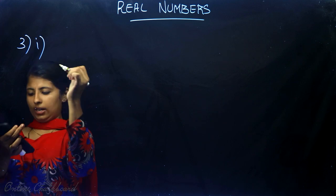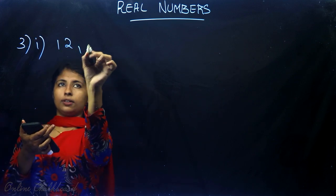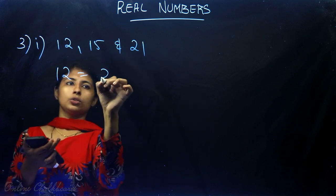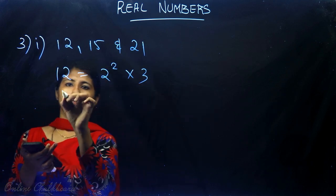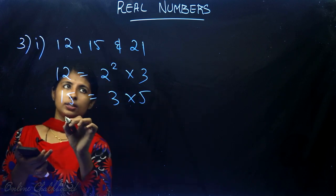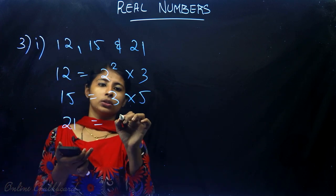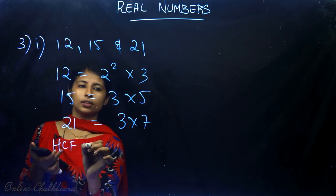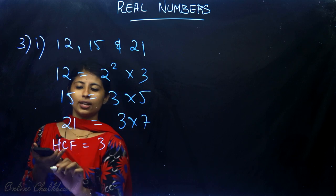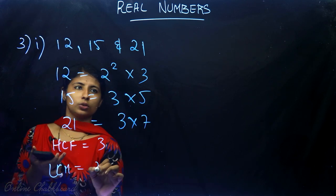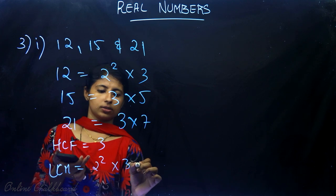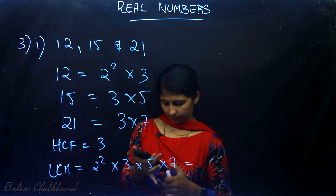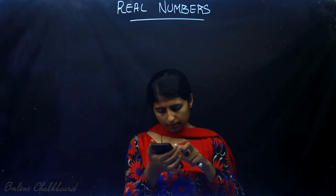For the sub-part with 12, 15, and 21: 12 = 2² × 3, 15 = 3 × 5, and 21 = 3 × 7. The highest common factor present in all three is 3, so HCF = 3. LCM = 2² × 3 × 5 × 7 = 4 × 3 × 5 × 7.